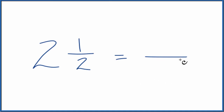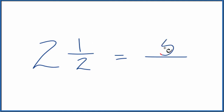So to do that, we take the whole number, 2, times the denominator: 2 times 2 is 4, plus the numerator, 1, that gives us 5. So again, 2 times 2 is 4, plus 1, that gives us 5. Then we just bring the denominator across.